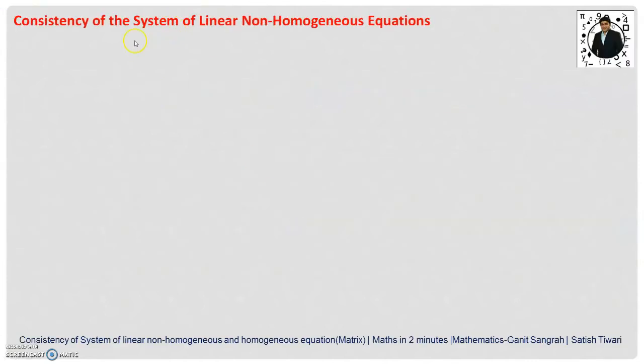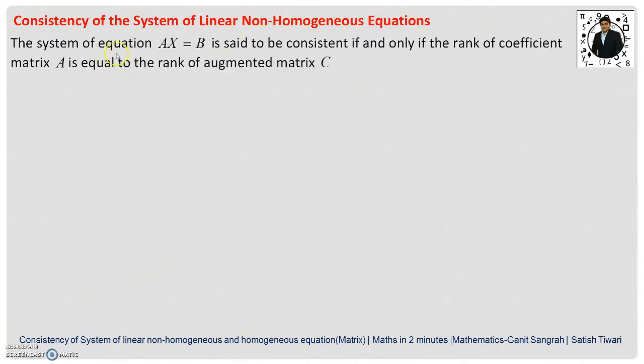First of all, we will see consistency of system of linear non-homogeneous equations. The system of equation Ax equals B, this is the non-homogeneous equation because this B is not a null matrix. This system is said to be consistent if and only if the rank of coefficient matrix A is equal to the rank of augmented matrix C, the matrix obtained by the combination of A and B.